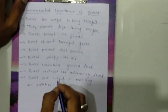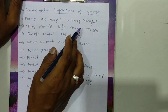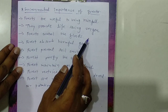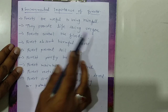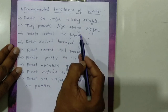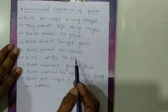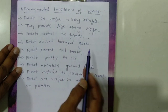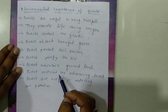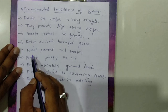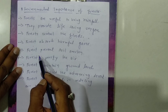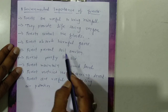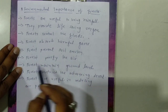Now let us discuss each point briefly. Forests are useful to bring rainfall as trees attract rain. They provide life-saving oxygen, which is essential for all living organisms. Forests control floods by reducing the flow of water, especially with shelter belts along riverbanks. Forests absorb harmful gases like carbon dioxide and carbon monoxide and give back life-saving oxygen.